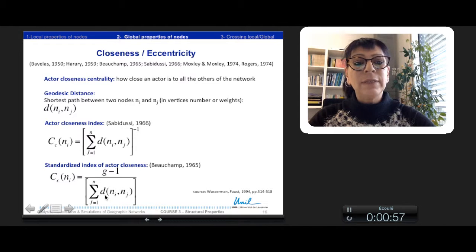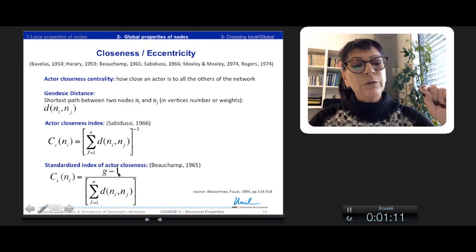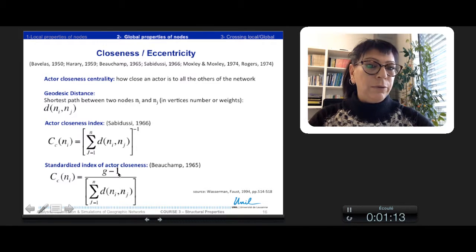Which is a summary of all the distance from a node i to all the other nodes j. We can standardize this index according to the size of the network, so the number of nodes, here g-1.